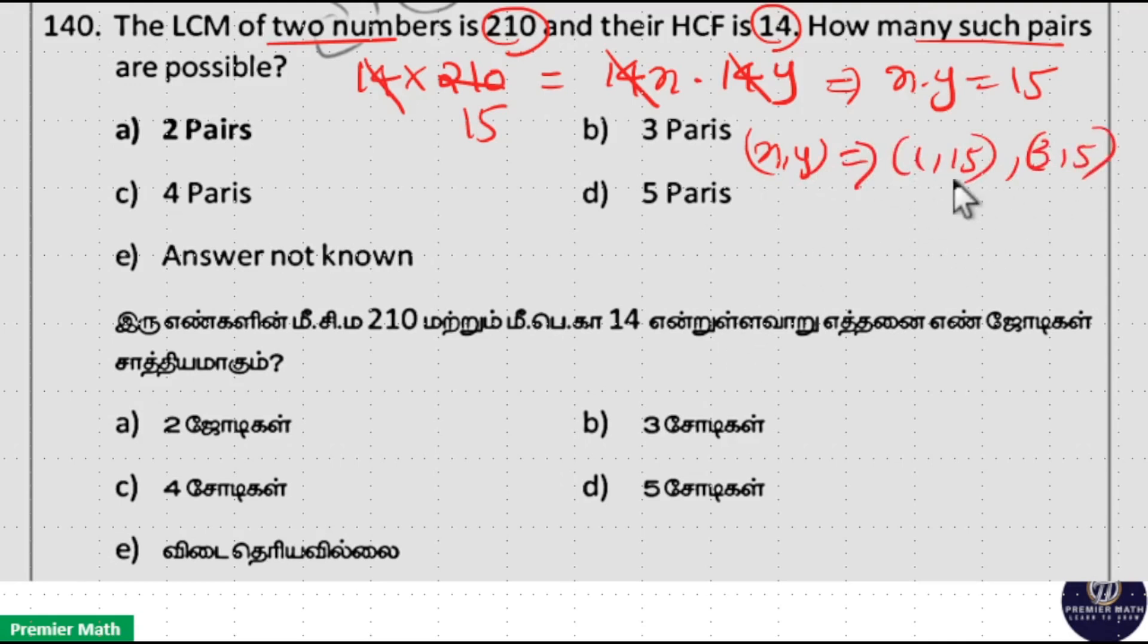Reverse is not possible because if you take the reverse, numbers will be same. That is, here numbers are if X and Y are 1 and 15, numbers are 14X and 14Y. So multiply it with 14. 14 into 1 is 14 and 14 into 15 is 210. So 14 and 210 are one such pair, and 14 into 3 is 42 and 14 into 5 is 70.